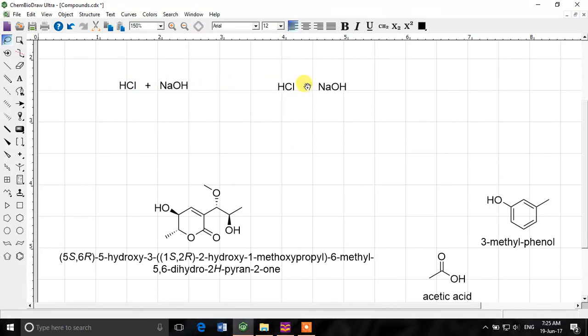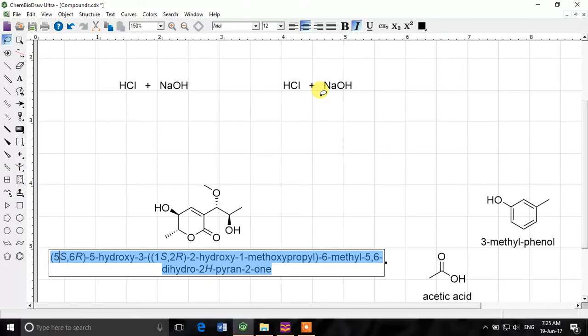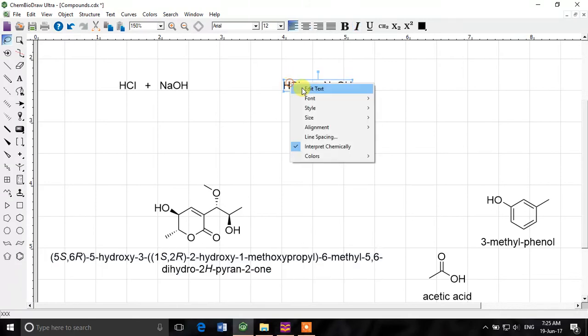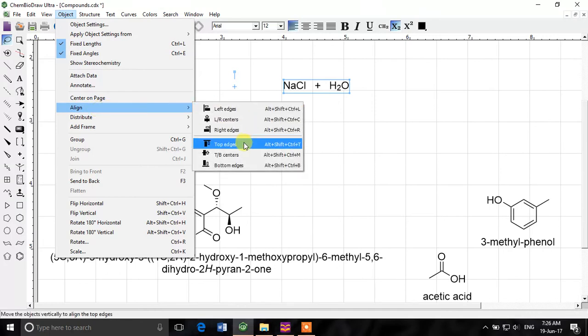And it gives us, I'll make a copy of it. NaCl plus H2O. And we can select this two and go to this subscript and now we'll align these first. So I'll select this one and then this one, object, align, top edges.